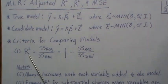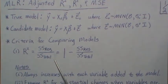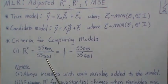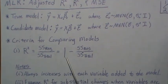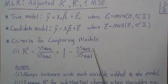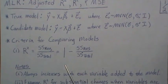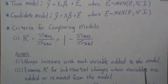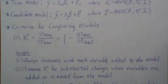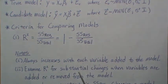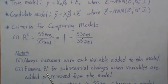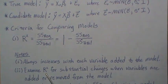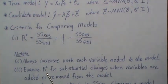First is R squared, which is the explained variability by the regression model: sum of squares regression over sum of squares total. It can also be thought of as one minus sum of squares residual over sum of squares total. We've shown that R squared always increases when each variable is added to the model, so when comparing models using R squared you want to look for significant changes, because it will always change at least by a little bit.